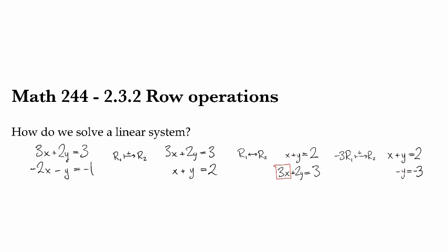I can multiply one row by a non-zero constant. So I'll do negative 1 times row 2, and that's going to give me I've still got my x plus y equals 2, and now y equals 3, and I've found the value of one of my constants, or one of my variables.